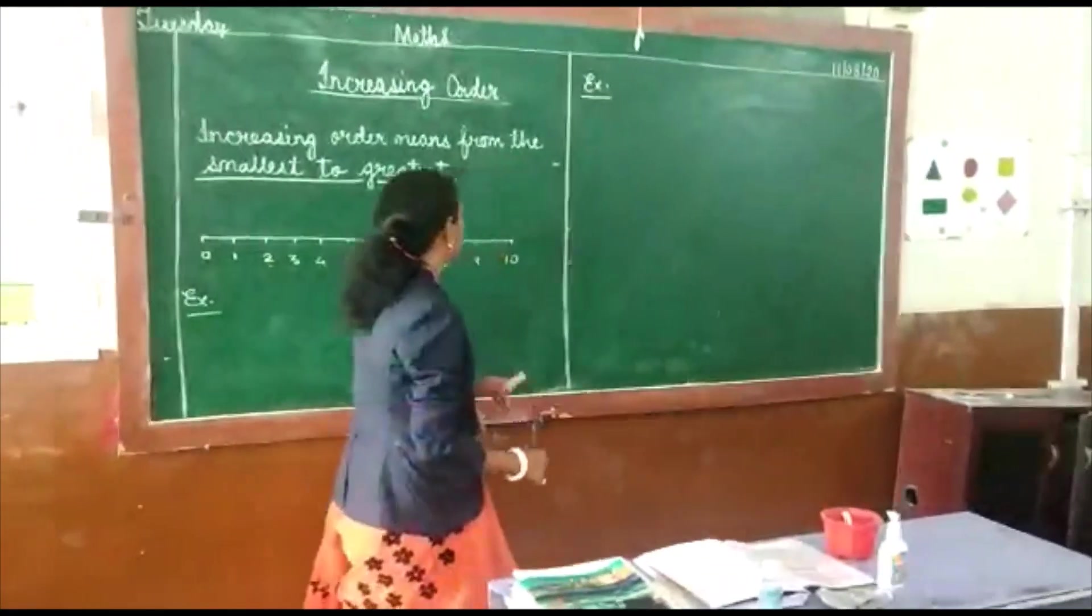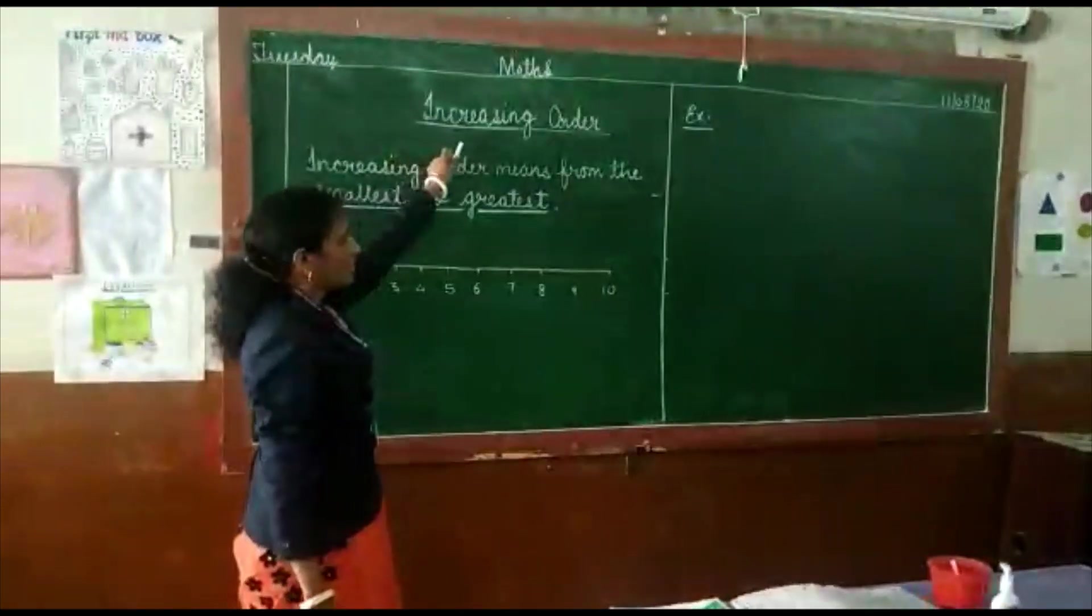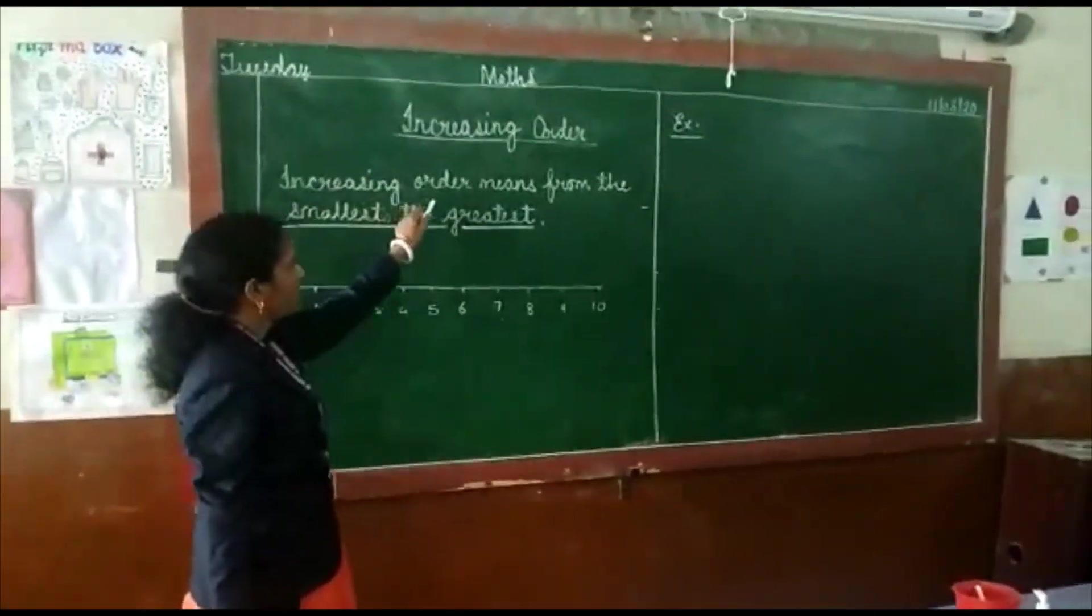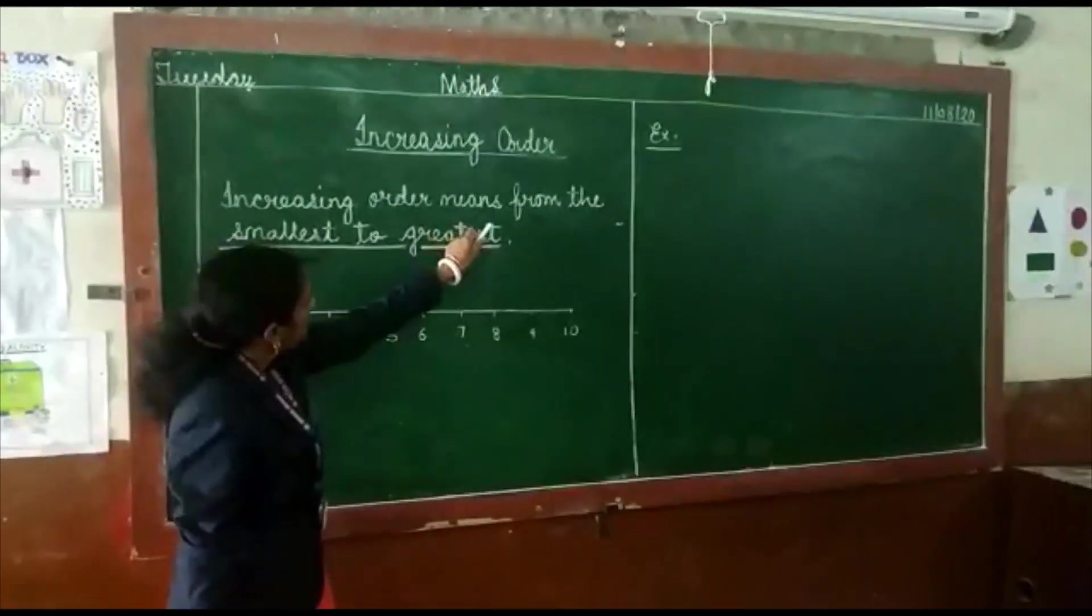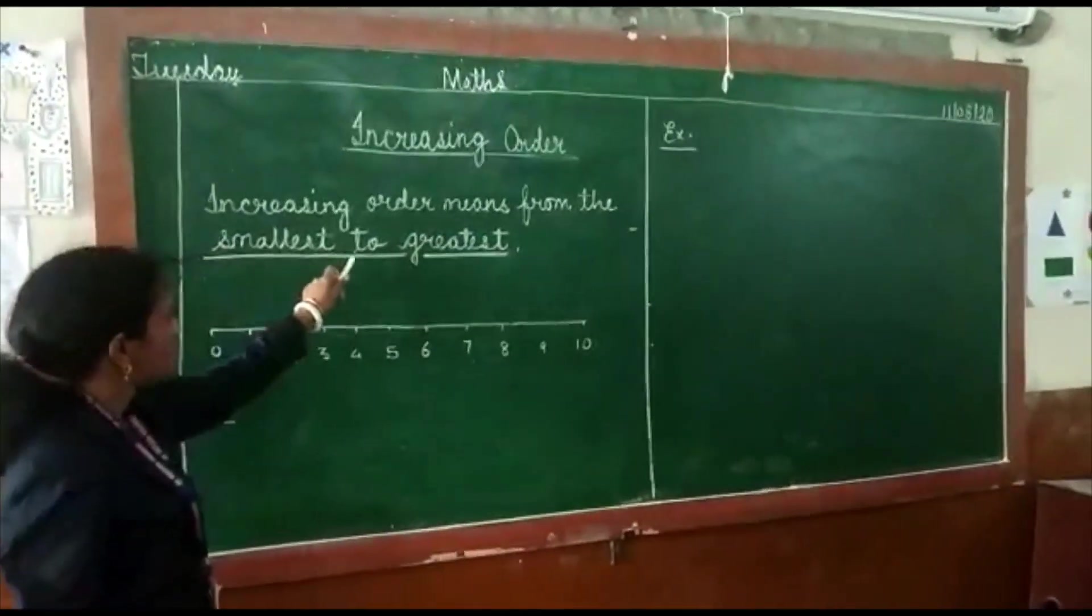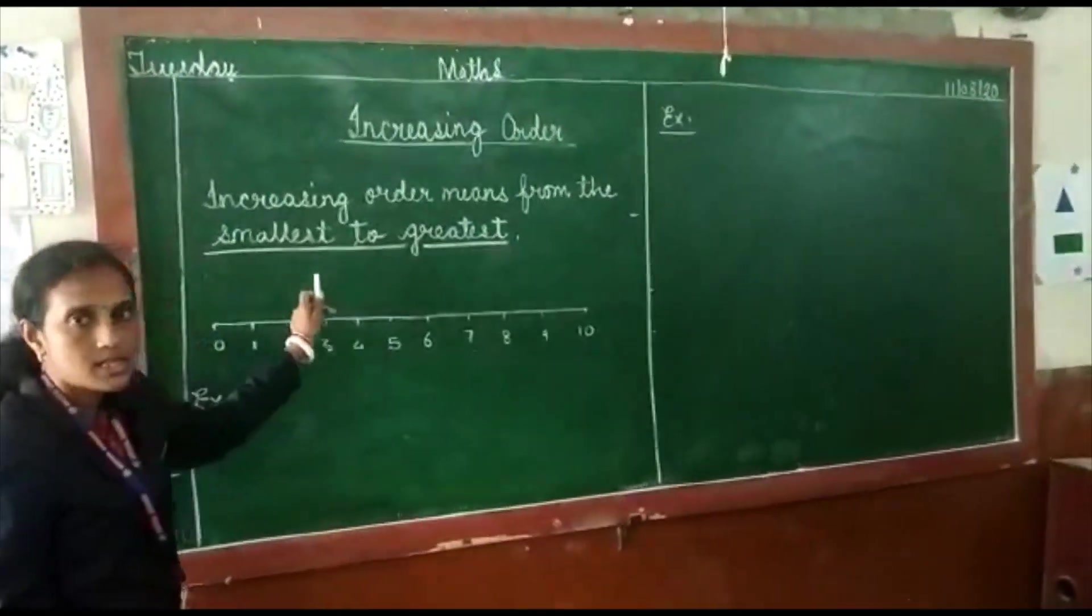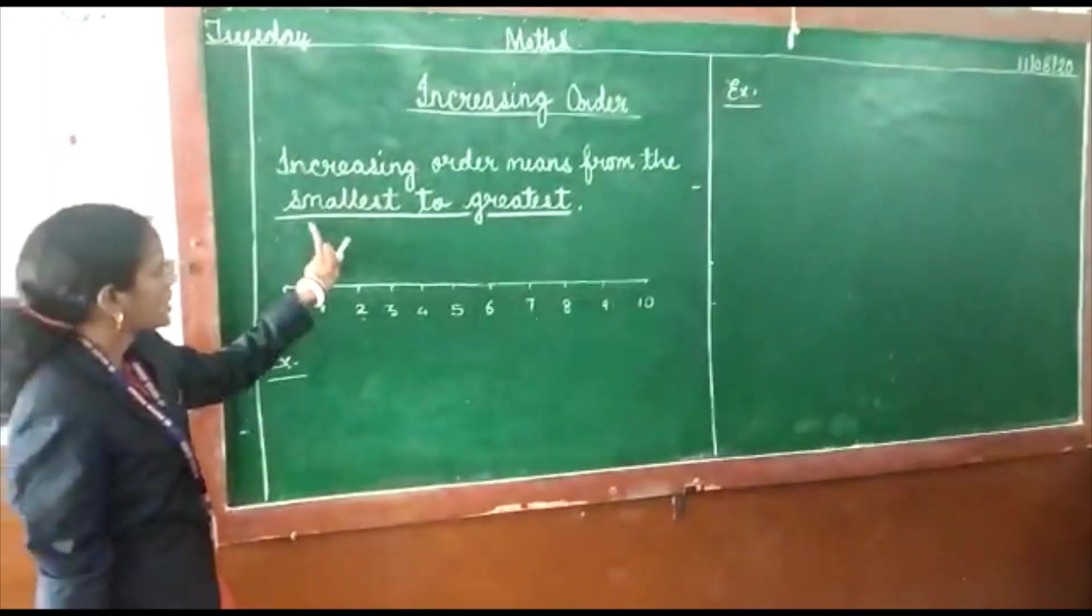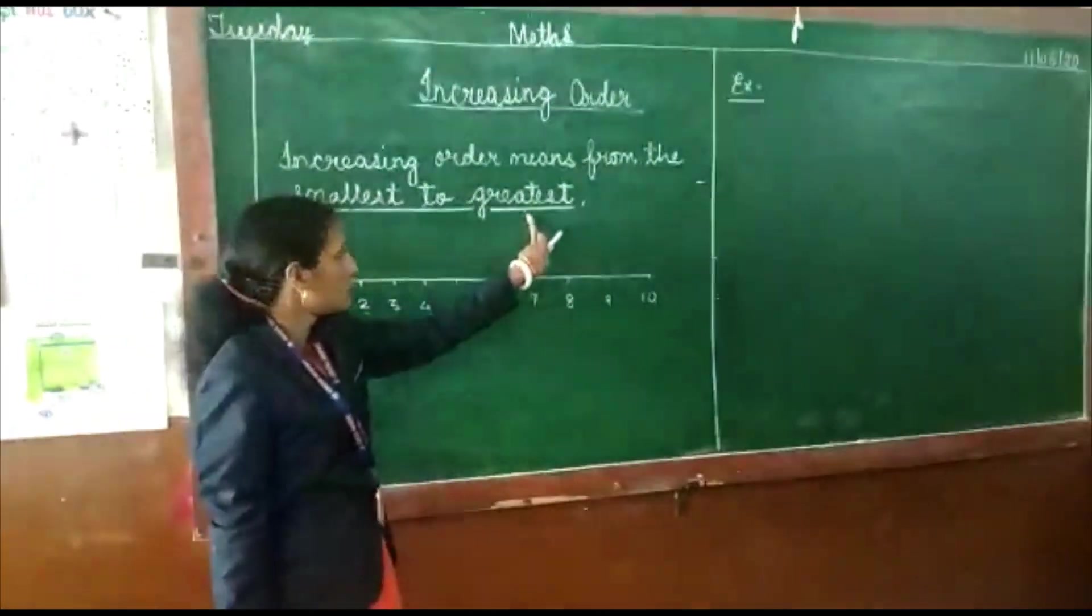Our today's topic is increasing order. Increasing order means from the smallest to greatest. Increasing order ka matlab hota hai, chote number se bade number ki taraf jana.